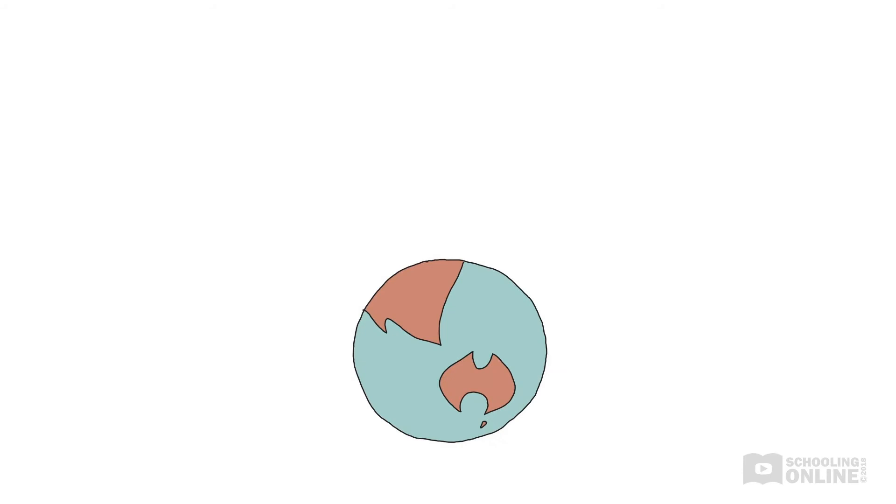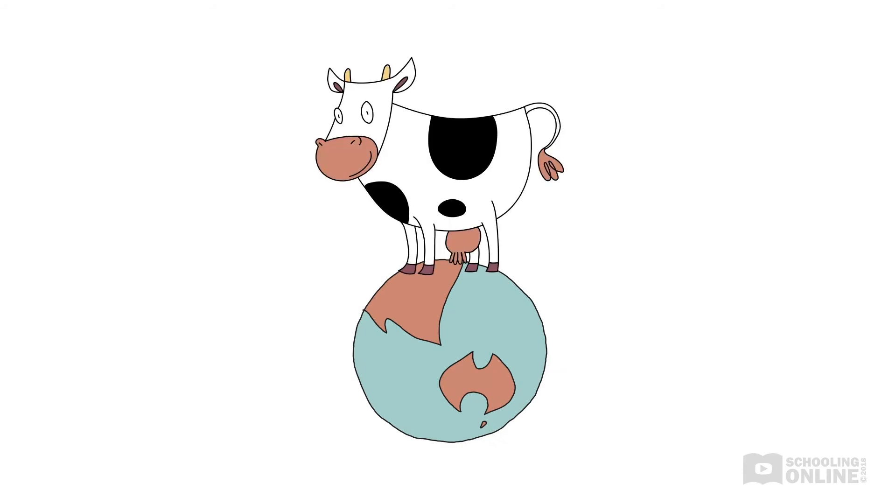Although there is a large disparity in mass between the Earth and the cow, Newton's third law still applies as usual. The gravitational force exerted by the cow is equal and opposite to the gravitational force of the cow on the Earth.